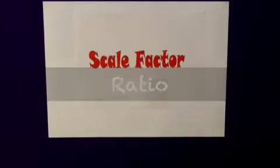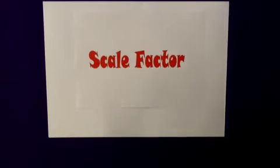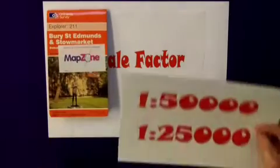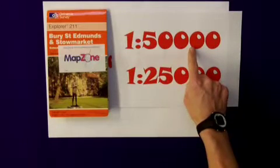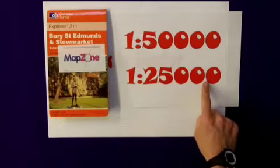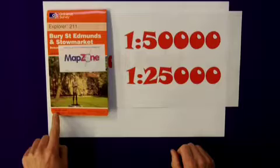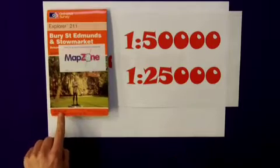Now, scale factor is often expressed as a ratio. Maps, for example, will often have the ratios of, say, 1 to 50,000, or 1 to 25,000. This map here is a 1 to 25,000 scale. But what does that actually mean?